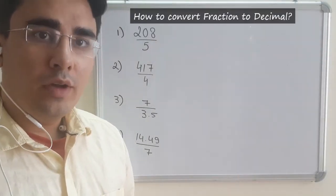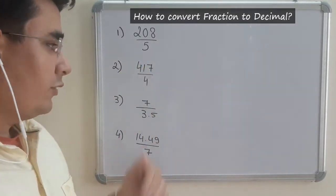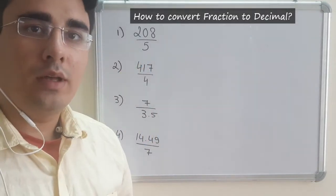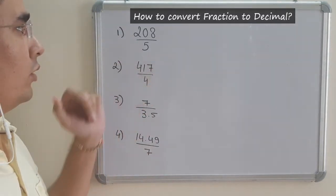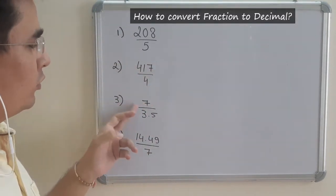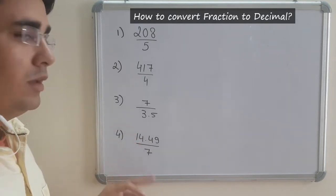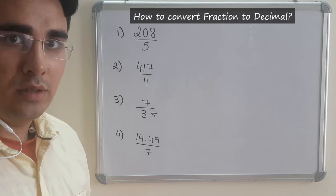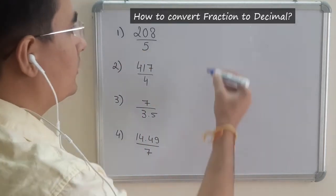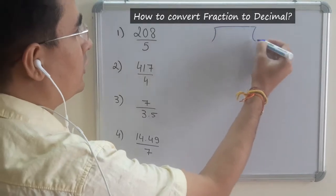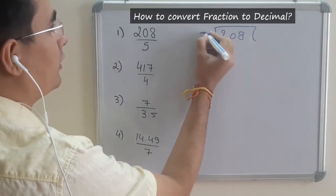Welcome students. Today we are going to look at division. We will be doing a few questions. We will be dividing a whole number by a whole number, then a whole number by a decimal number, decimal by whole, and similarly decimal by decimal. Let's start with the first one — our objective is to reach the decimal. 208 divided by 5.